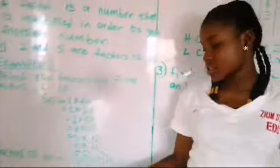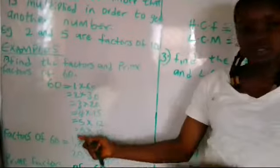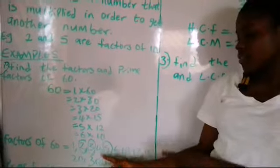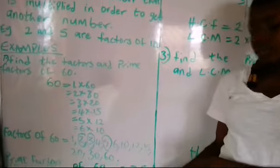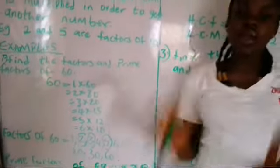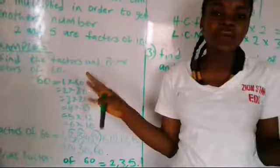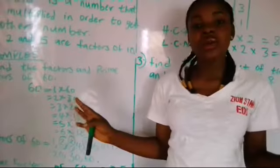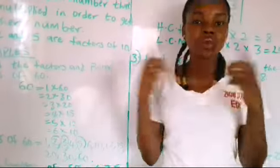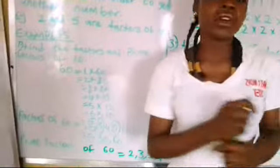The prime factors are 2, 3, and 5. They are called prime factors because they cannot be divided by any other number apart from themselves and 1. That is why they are called prime factors.